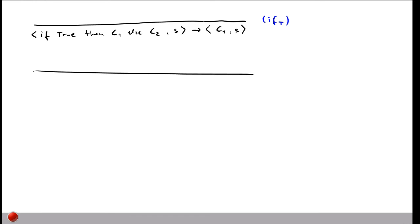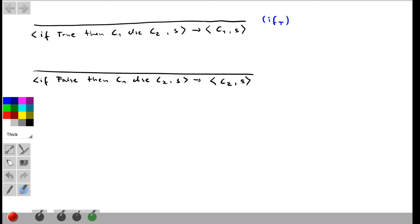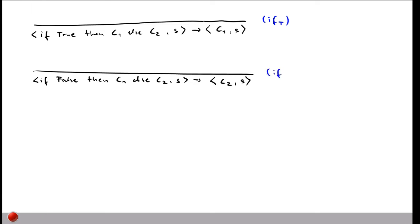Similarly, for the false case: if we have an if statement where the Boolean condition evaluates to false, then it reduces to just taking the else branch, C2. Then in the next step we can evaluate C2. This is the if-false rule. Of course, to reach 'if true' or 'if false', we first have to evaluate the Boolean expression — let's look at how we do this.